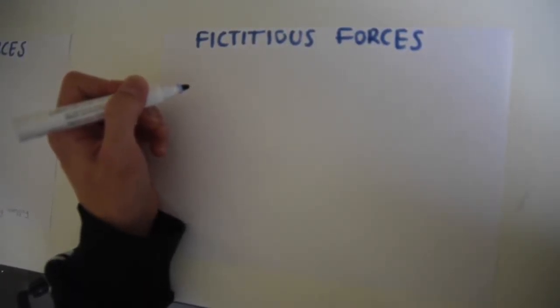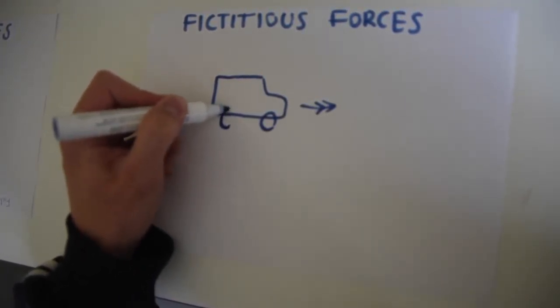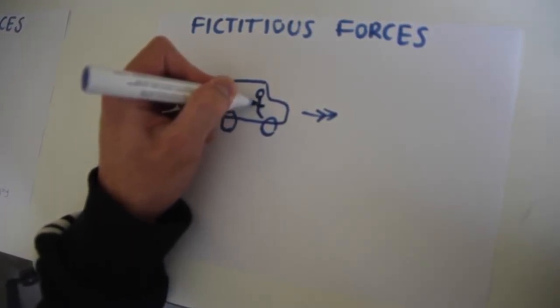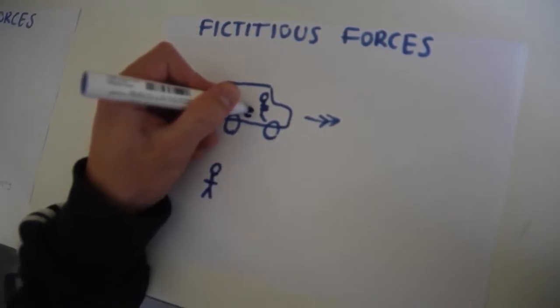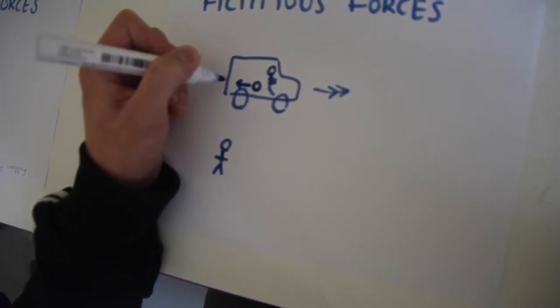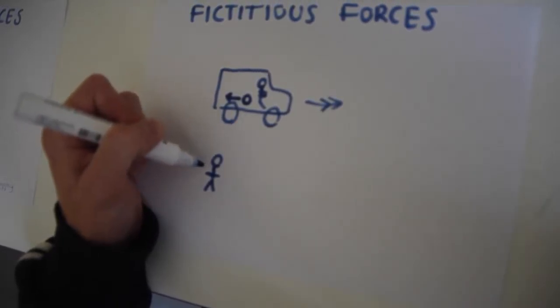An example of a fictitious force is when you're in a car. If the car is accelerating forwards, there are two observers: one inside the car and one outside. There is a ball free to move inside the car. When the car accelerates, the ball rolls towards the back. The observer inside sees it accelerate backwards, but the person outside sees the ball as stationary. This is the fictitious force — the ball appears to accelerate backwards from one frame, yet is stationary from another.